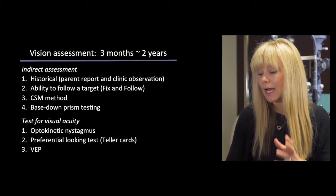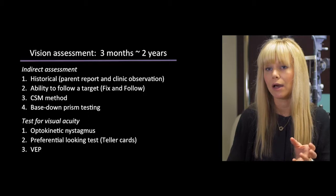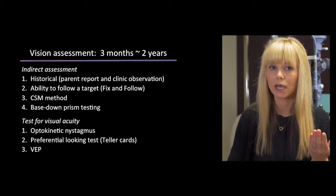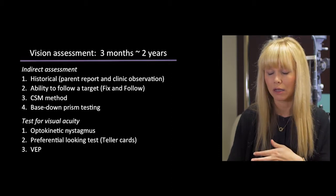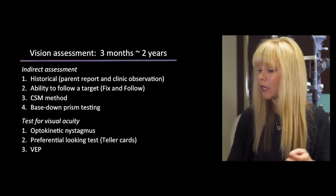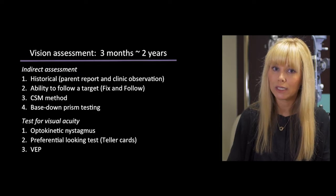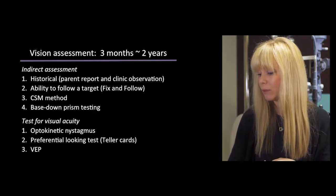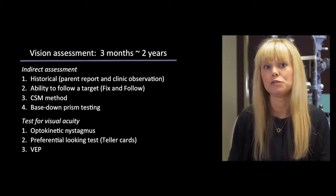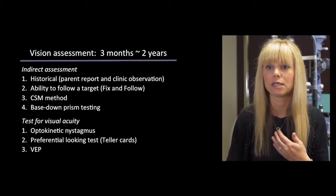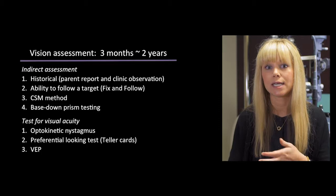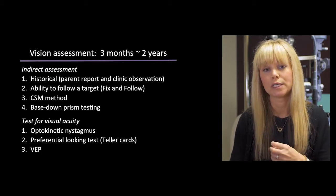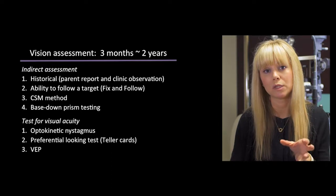We can also test visual acuity more directly in this population using the phenomenon of optokinetic nystagmus with an OKN drum. We can use preferential looking tests — Teller visual acuity is an example of this. And finally, we can use visually evoked potentials, which is an electrophysiology technique that measures the speed of transmission of a visual stimulus to the brain.